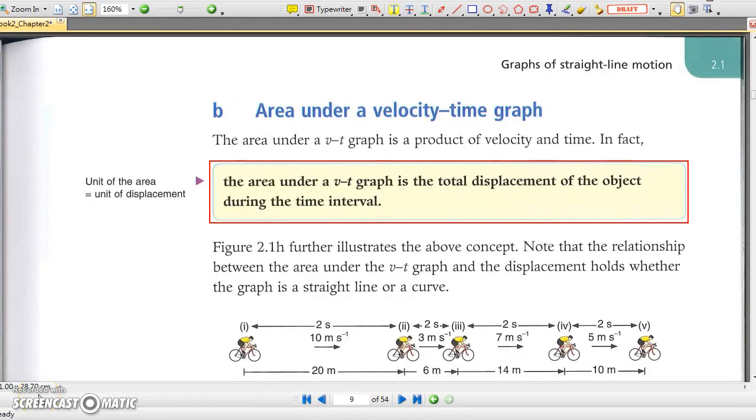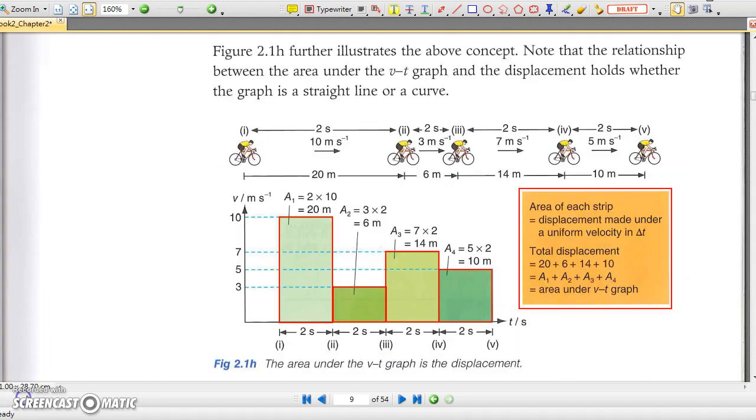B. Area under velocity time graph. The area under velocity time graph gives the change in displacement of the motion within the specific time interval. Let's take a look at the motion of a bicycle in figure 2.1h. As an example, the velocity time graph in green represents its motion.